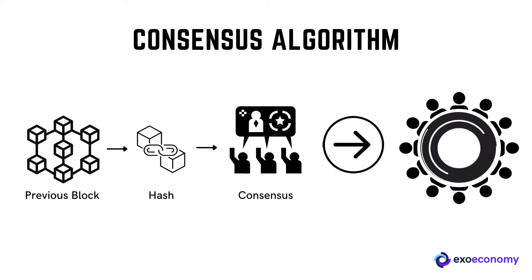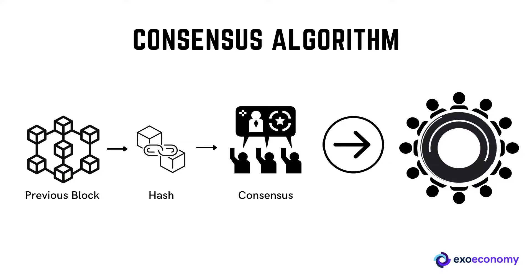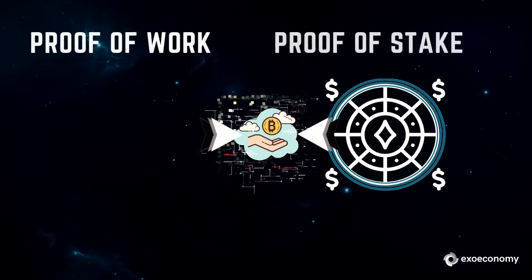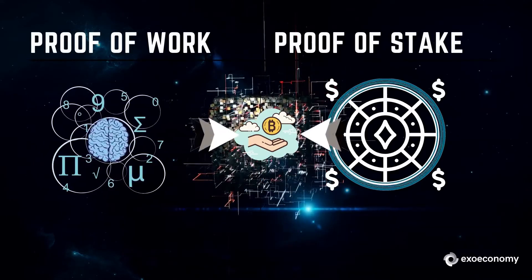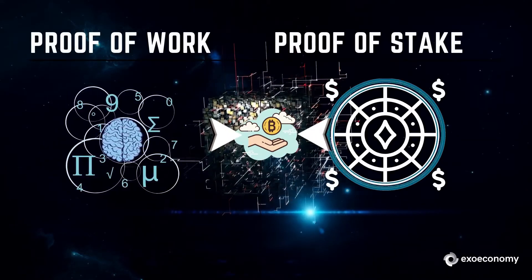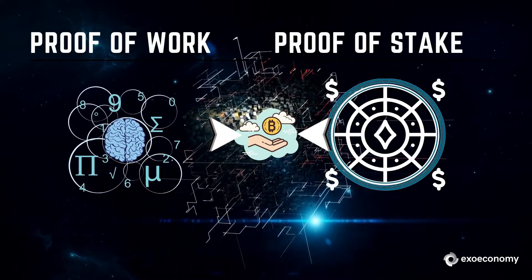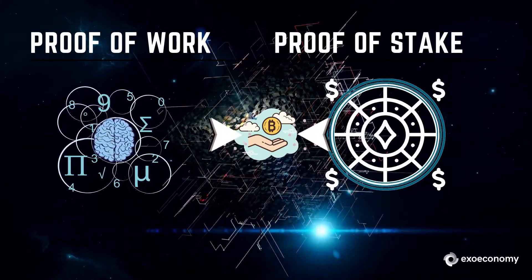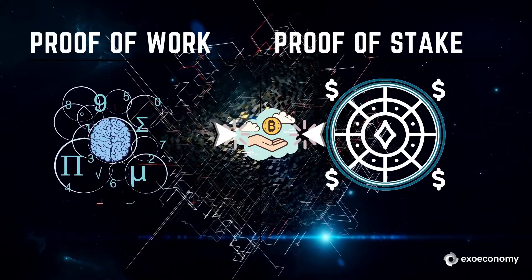Without a consensus algorithm, there would be no way to tell who owns what on a blockchain. It is a protocol for how a specific blockchain network establishes and verifies its transactions. The most popular consensus algorithms are proof-of-work and proof-of-stake.